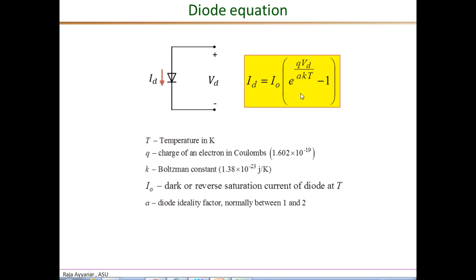Here, q refers to the charge of an electron in Coulombs and it has a value of 1.6 × 10^-19. K is the Boltzmann constant in joules per Kelvin and it has a value of 1.38 × 10^-23. T, of course, is the temperature in Kelvin.